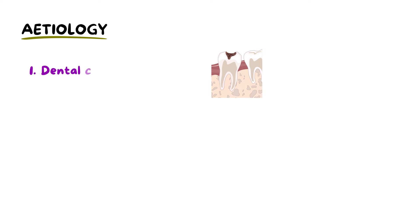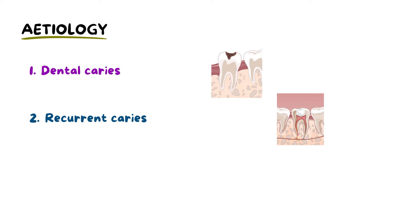Pulpitis stems from multiple causes. For example, dental caries, particularly when left untreated, provides a gateway for bacterial infiltration, leading to pulp inflammation. Additionally, factors such as recurrent caries underneath a restoration or a deep restoration contribute to ongoing decay and irritation to the pulp.